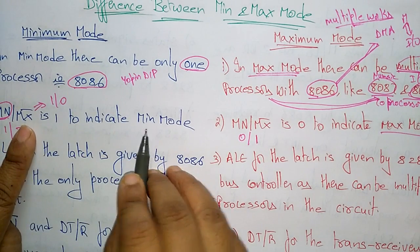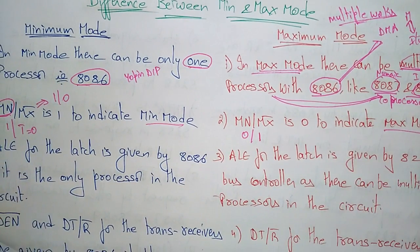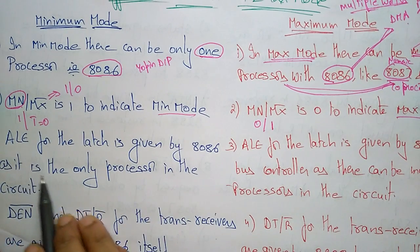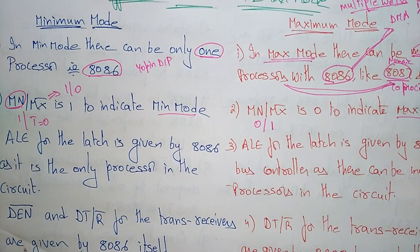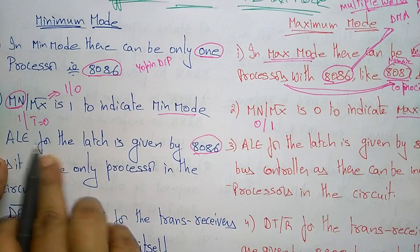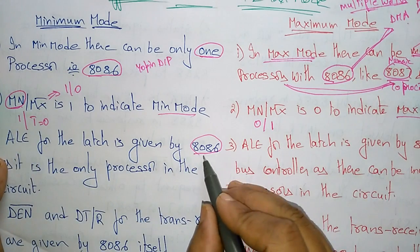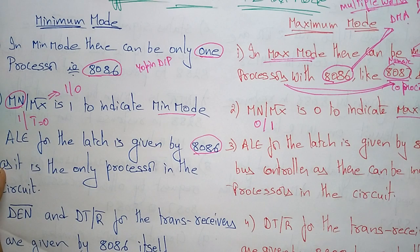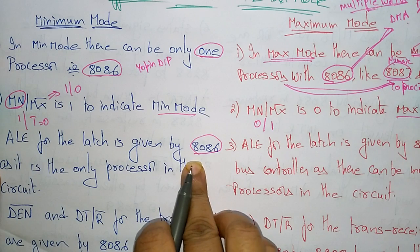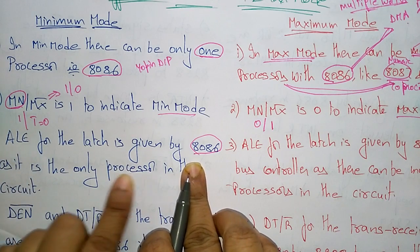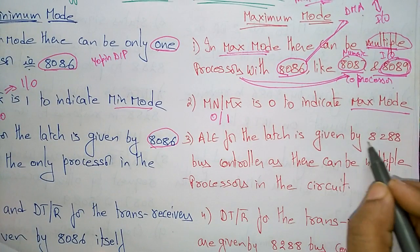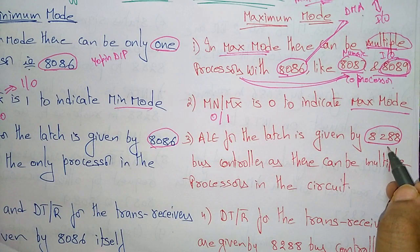The Address Latch Enable, ALE, signal for the latch is given by the 8086 itself in minimum mode, since it is the only processor in the circuit. There are no other processors to make ALE active, so only the 8086 microprocessor drives that signal.